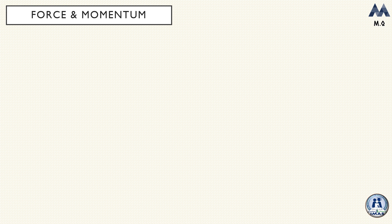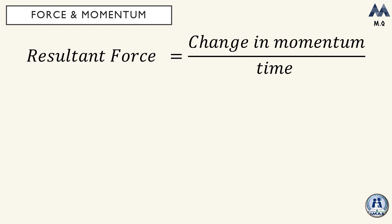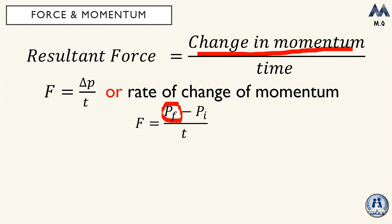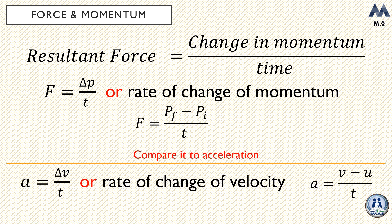From this conclusion we can derive another formula for force: the resultant force equals the change in momentum divided by time — in other words, the rate of change of momentum. The change in momentum is the final momentum minus the initial momentum. Compare this to acceleration: acceleration is the rate of change in velocity (final minus initial velocity over time). For force we look at the change in momentum, which includes both speed and mass.